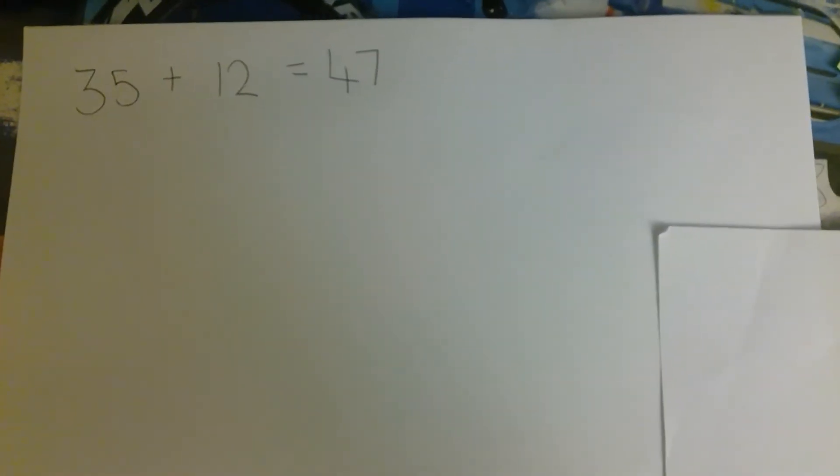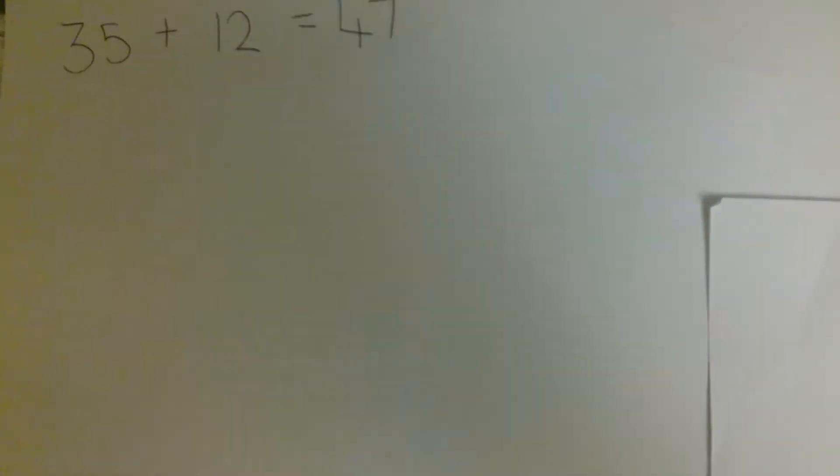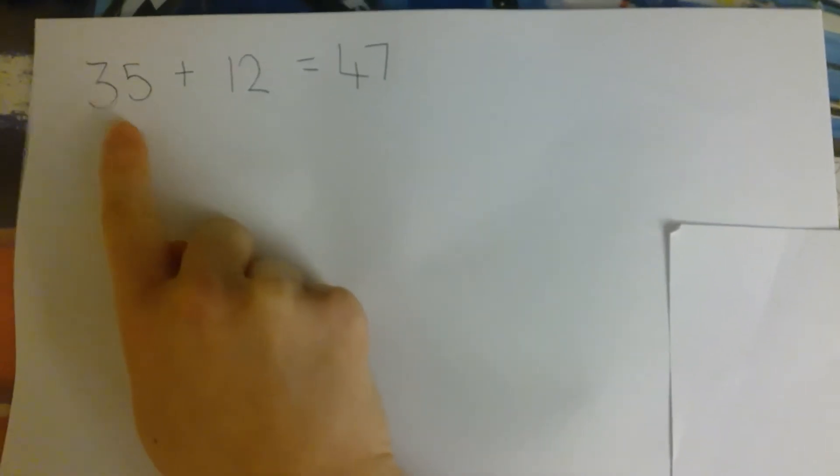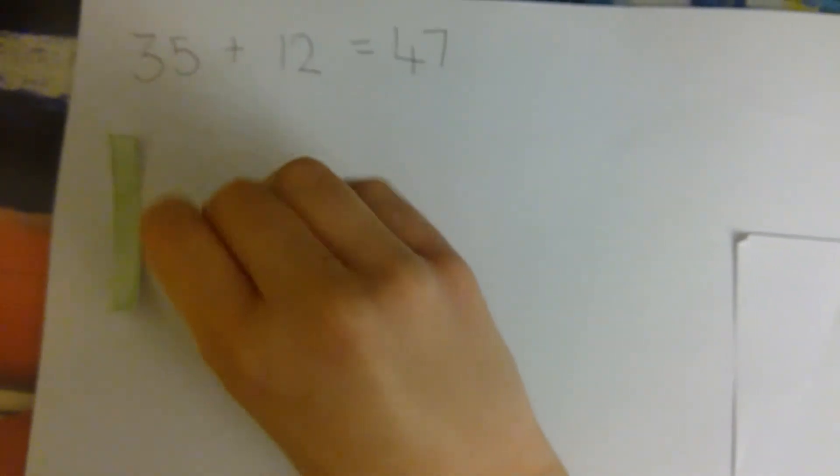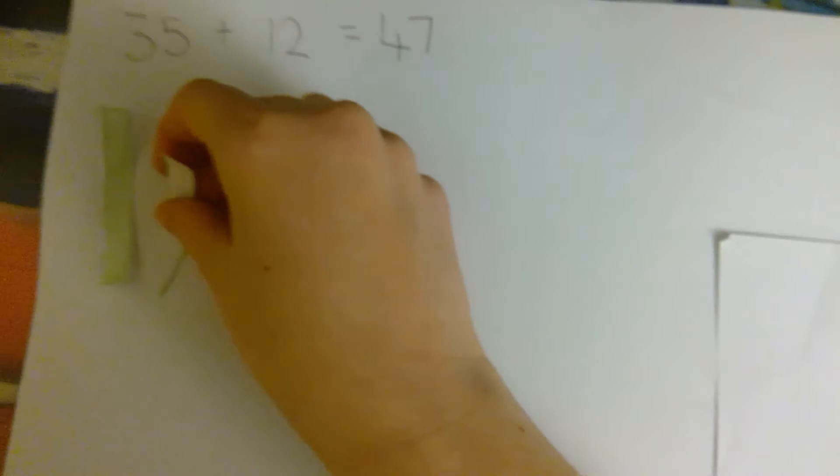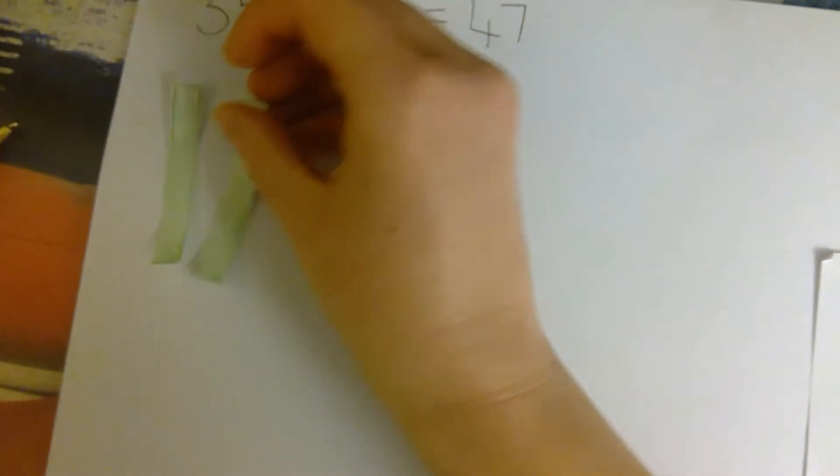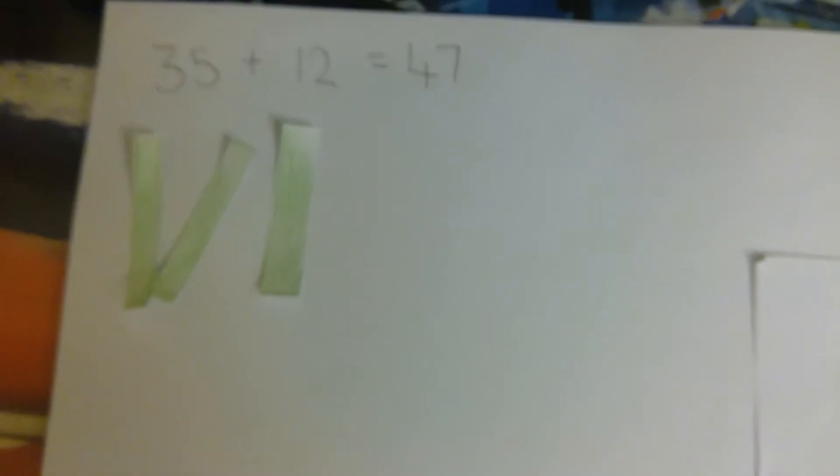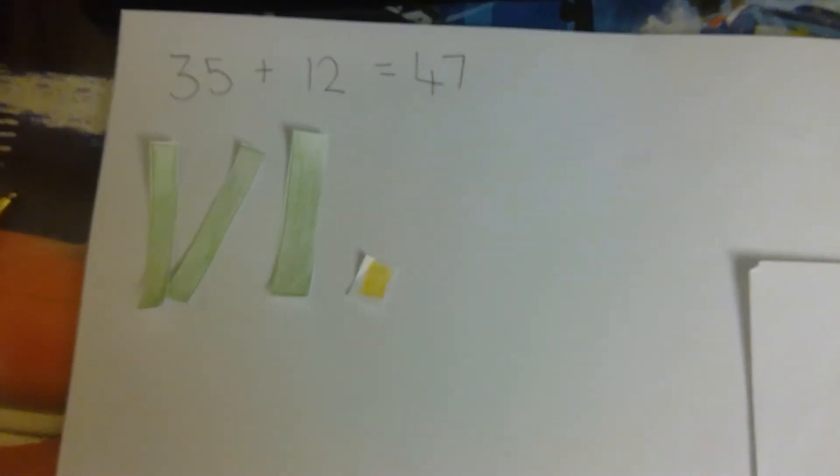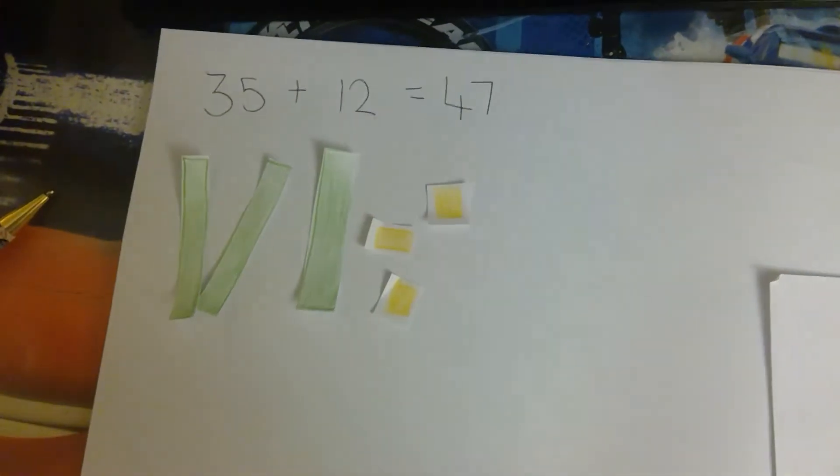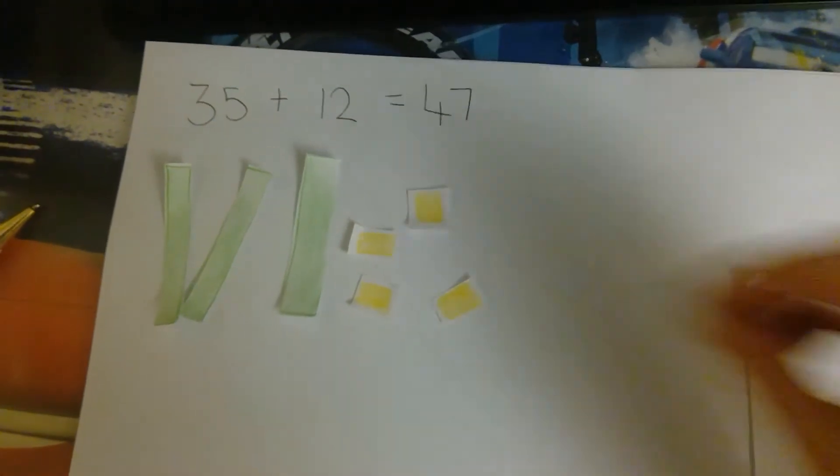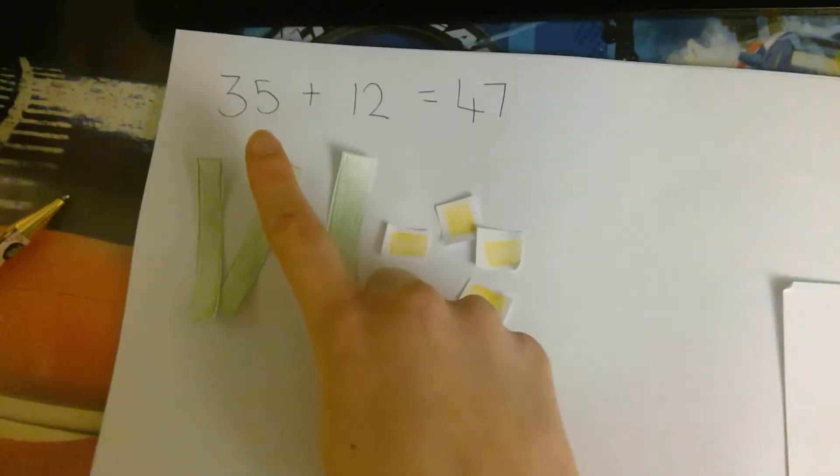Step 2. Show the calculation using manipulatives. 35. Make the number 35. 3 tens. 1, 2, 3. And 5 ones. 1, 2, 3, 4, 5. 35.